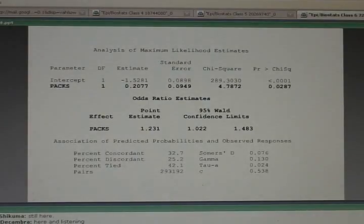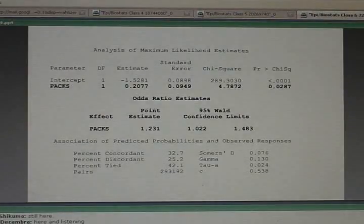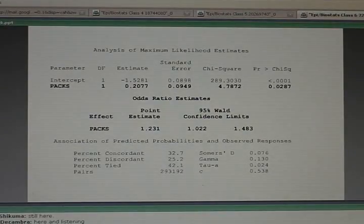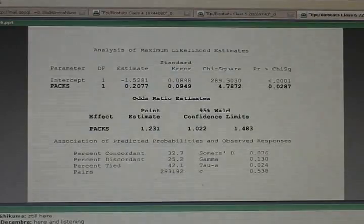Increasing your packs by one unit means changing from 0 to 1, from 1 to 2, or from 2 to 3 packs a day. The model assumes that when you compare a 1-pack-a-day smoker to a non-smoker, or a 2-pack-a-day smoker to a 1-pack-a-day smoker, or a 3-pack-a-day smoker to a 2-pack-a-day smoker, you're talking about the same odds ratio. We're talking about an odds ratio of 1.22.